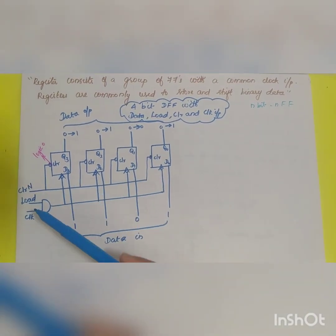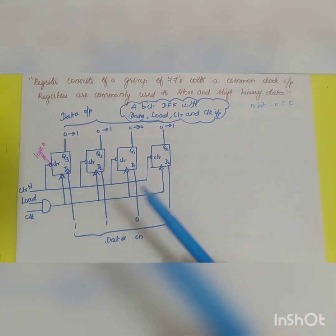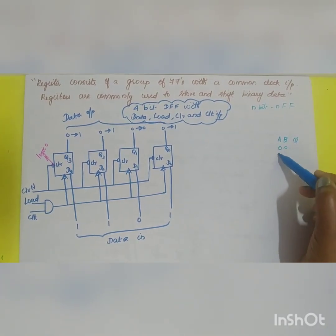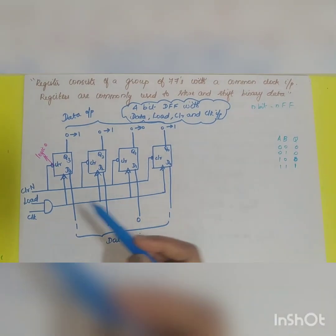Next the load and the clock are connected to the AND gate. The truth table of the AND gate is 0 0 gives 0, 0 1 gives 0, 1 0 gives 0, 1 1 gives 1. If any one input is 0 the output will be 0. If both inputs are high you will be getting the output to be high.